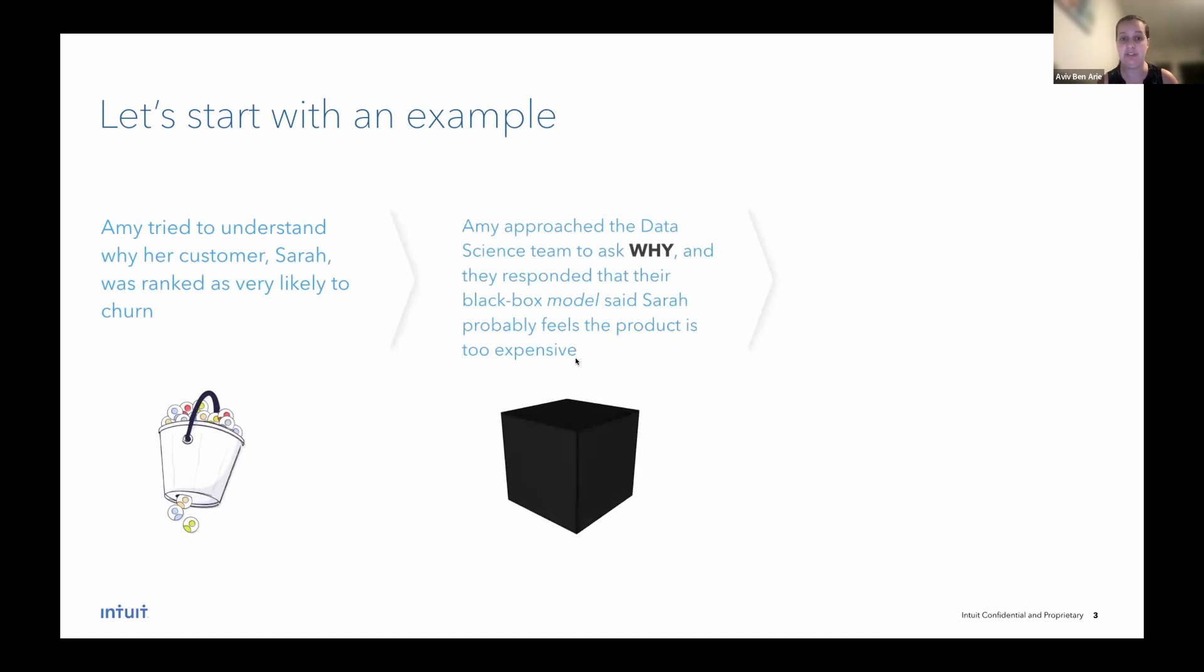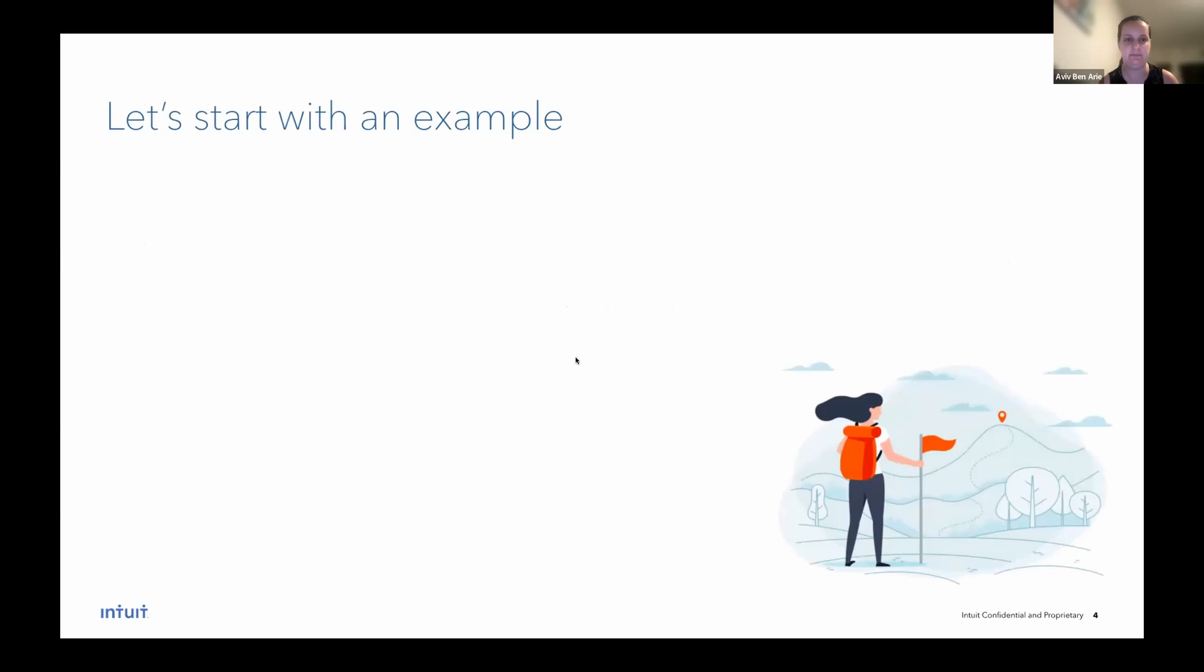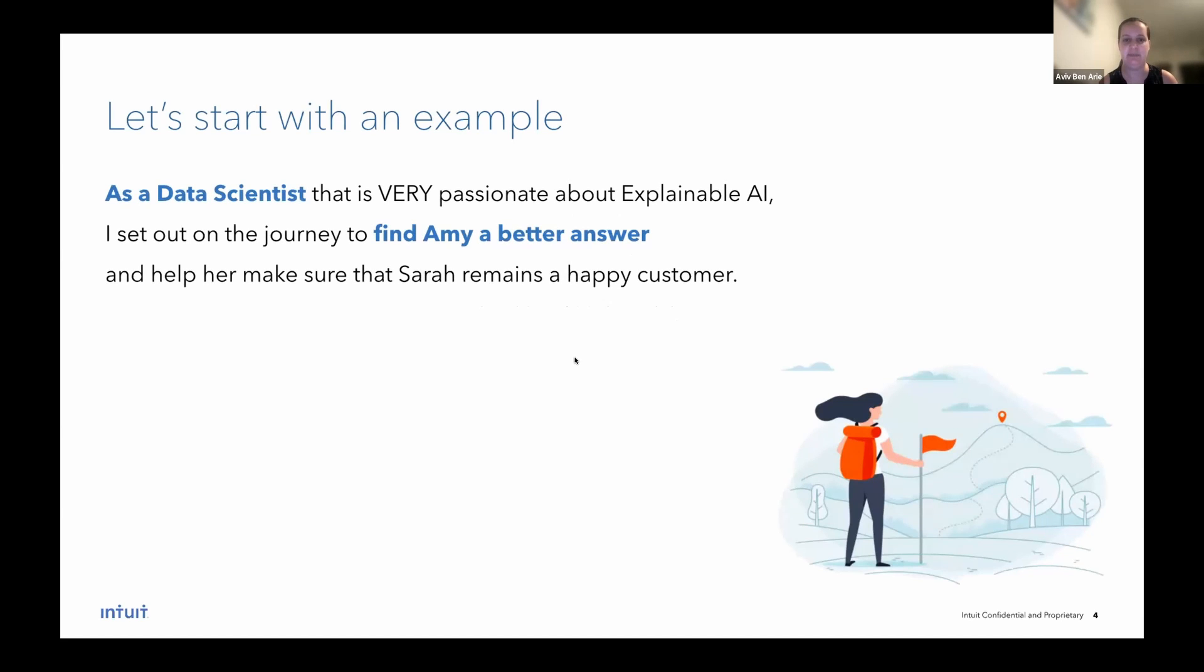Amy approached the data science team to ask why and they responded that their black box model said that Sarah probably feels the product is a bit too expensive for her. A bit worried, Amy asked how did the model come to this conclusion? She wanted to really understand the model prediction.